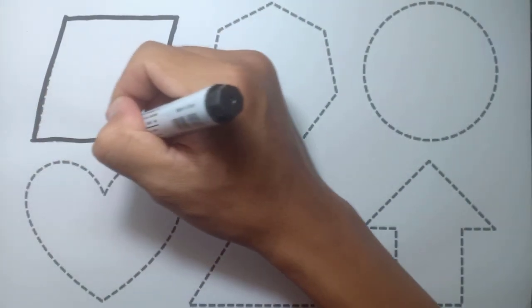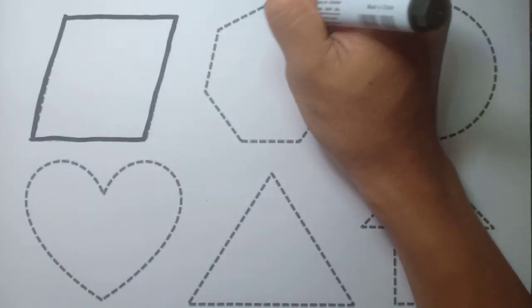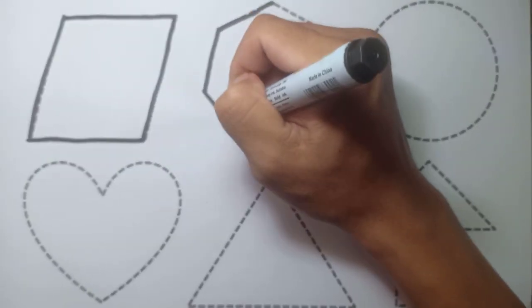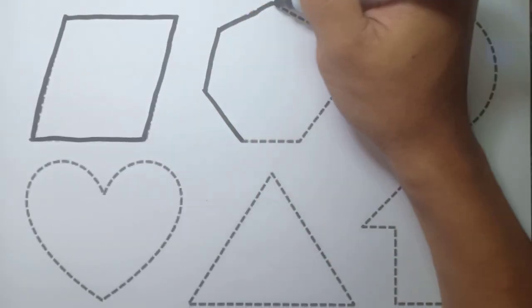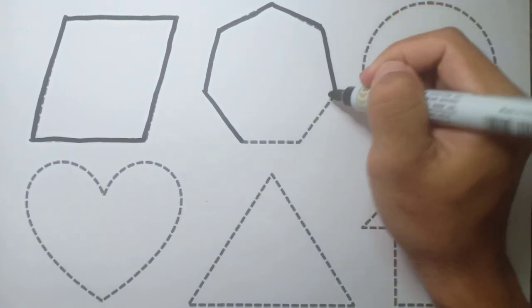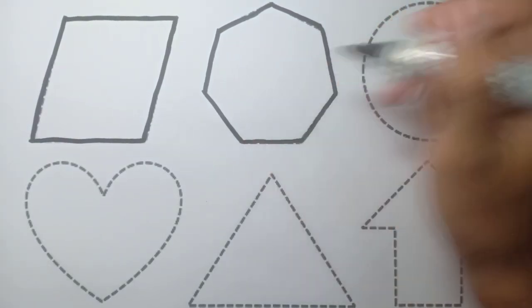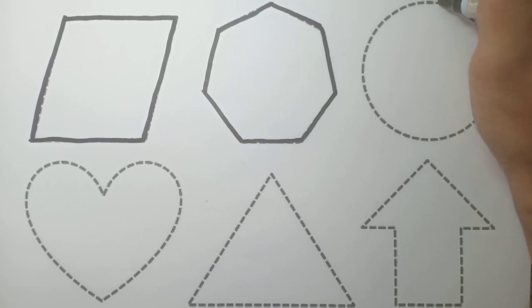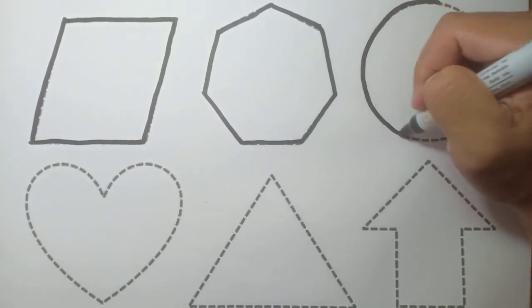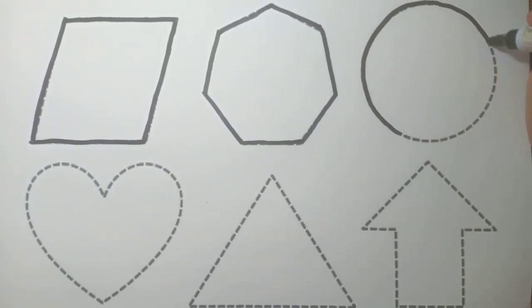This is rectangle. And this is heptagon, this is heptagon, this is heptagon. And this is oval, this is oval.